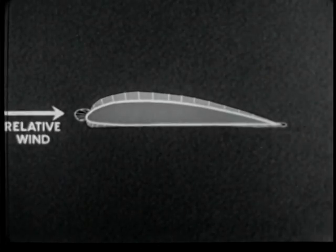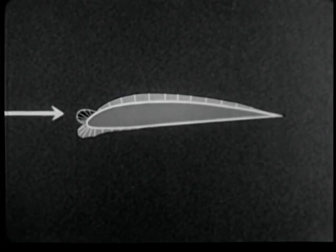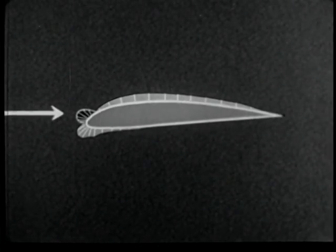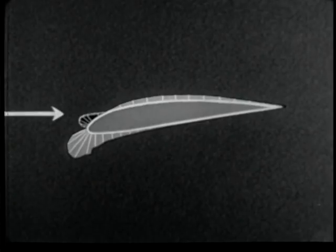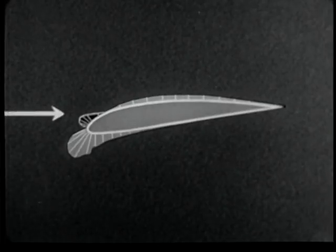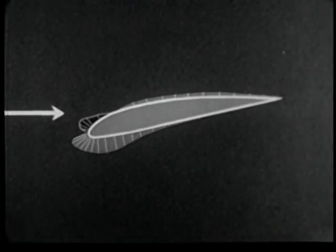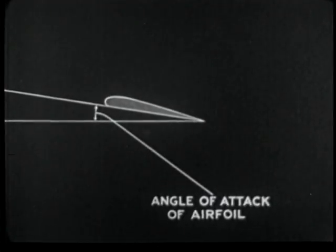Now let us see what happens to pressure values and distribution at negative angles of attack. From zero degrees, the angle is decreased to a slight negative value. The positive pressure bulb on the leading edge is practically unchanged. The negative pressure on the upper surface of the wing shows little change. However, the negative pressures along the lower surface begin to increase at the leading edge. Further increases in this area, accompanied by very slight changes in the positive pressure bulb, are the only differences which are readily observable as the angle of attack is further decreased.